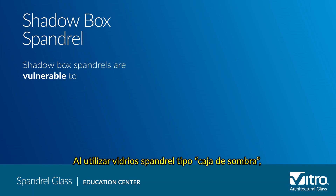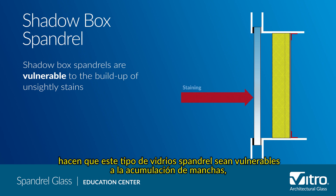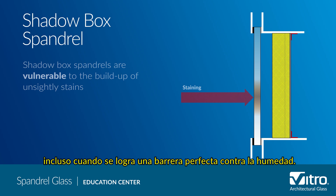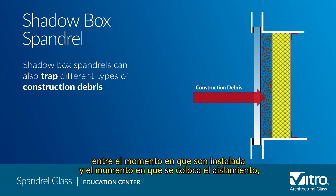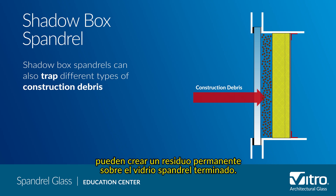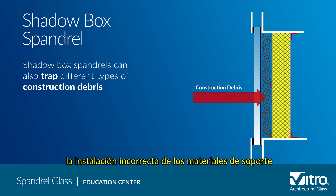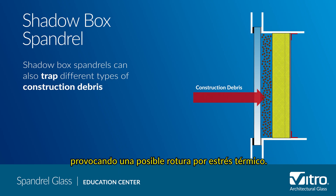When using shadow box spandrels, you need to consider that condensation and drying make shadow box spandrels vulnerable to the buildup of unsightly stains, even when a perfect moisture barrier is achieved. Shadow box spandrels also can trap different types of construction debris between the time they're glazed and the time the insulation is installed, and VOCs from paint, sealants, and other materials can create a permanent residue on the finished spandrel. Finally, improper installation of backing materials can cause hot spots in the shadow box spandrels, leading to potential breakage.